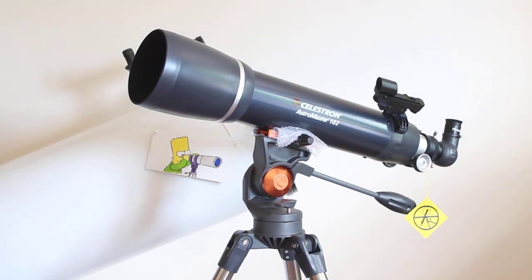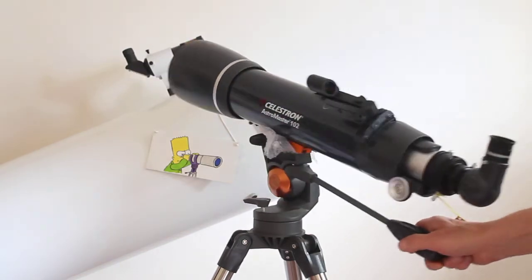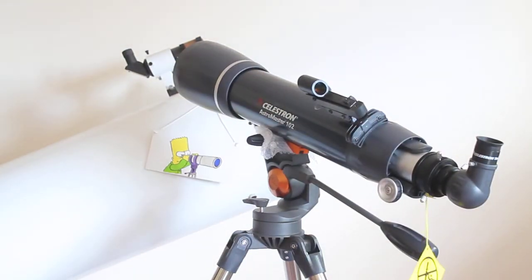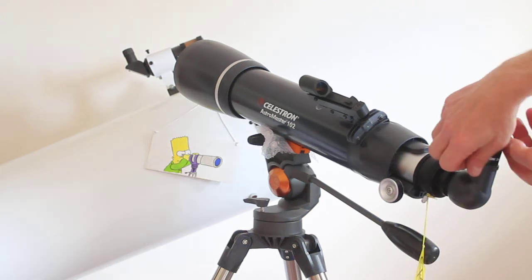Other than putting it on the mount, you've got the eyepiece here that fits in the diagonal, which is an erect image diagonal and also left-right correct orientation.